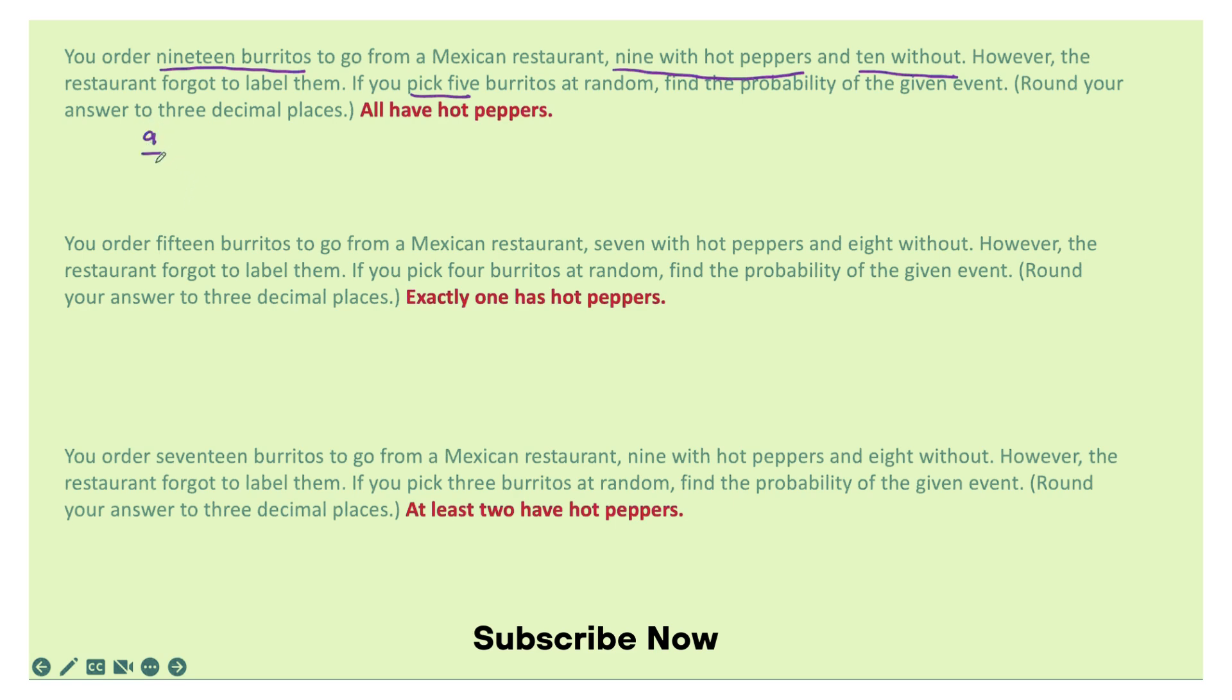So on the first pick, there's 9 out of 19 with hot peppers. Then there's only 8 with hot peppers left out of 18. Then there is only 7 out of 17 left with hot peppers. Then there's only 6 out of 16 with hot peppers left. Then there's only 5 out of 15 with hot peppers left.